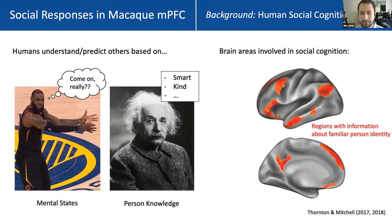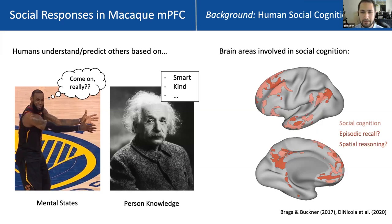In addition to responding to a range of high-level social cognition tests, these regions appear to be involved in storing information about familiar people. If you ask humans in a scanner to think about specific familiar people, spatial activity patterns in these regions can be used to decode which person they're thinking about. Importantly, these regions don't comprise the entire default mode network, but rather constitute a subset thereof.